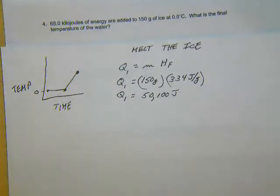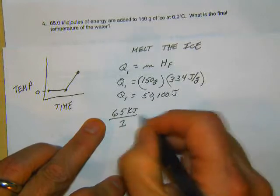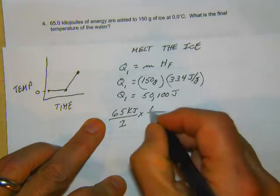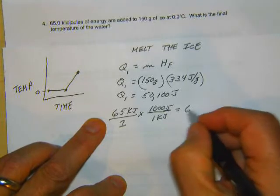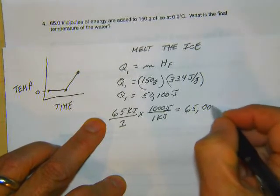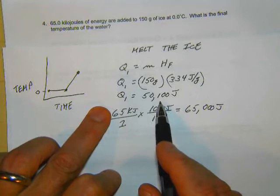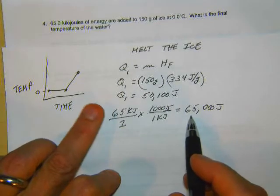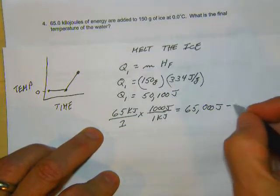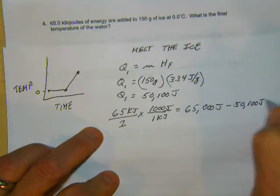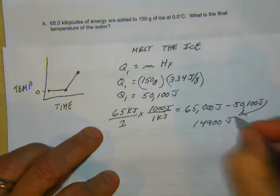Now we have 65 kilojoules. So 65 kilojoules over 1 times 1 kilojoule over a thousand joules. And we know that's going to equal 65,000 joules. Well we use up 50,100 are used up, but we got 65,000 to play with. So if you subtract those two, so we minus 50,100 joules, we have 14,900 joules left to play with.